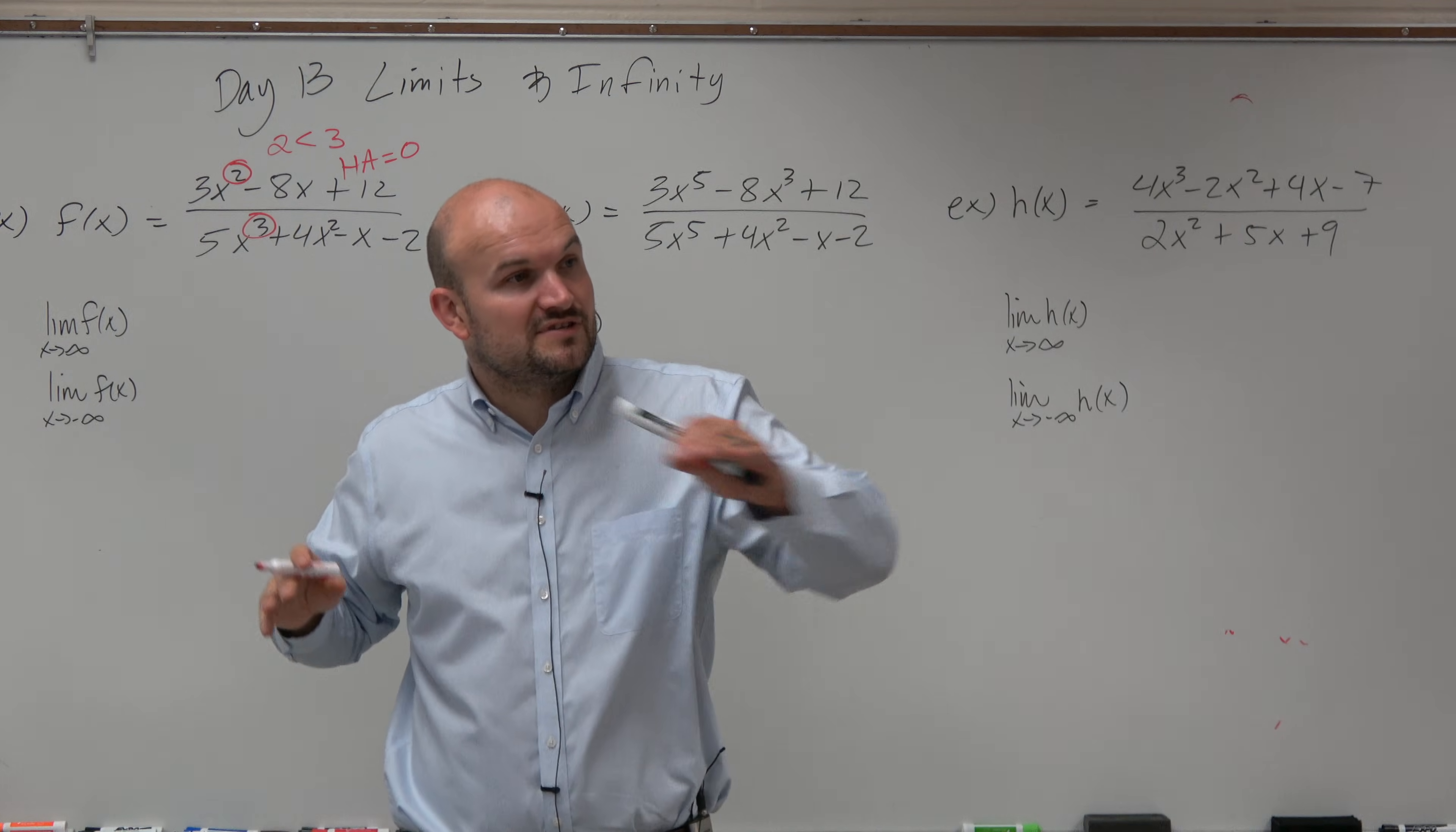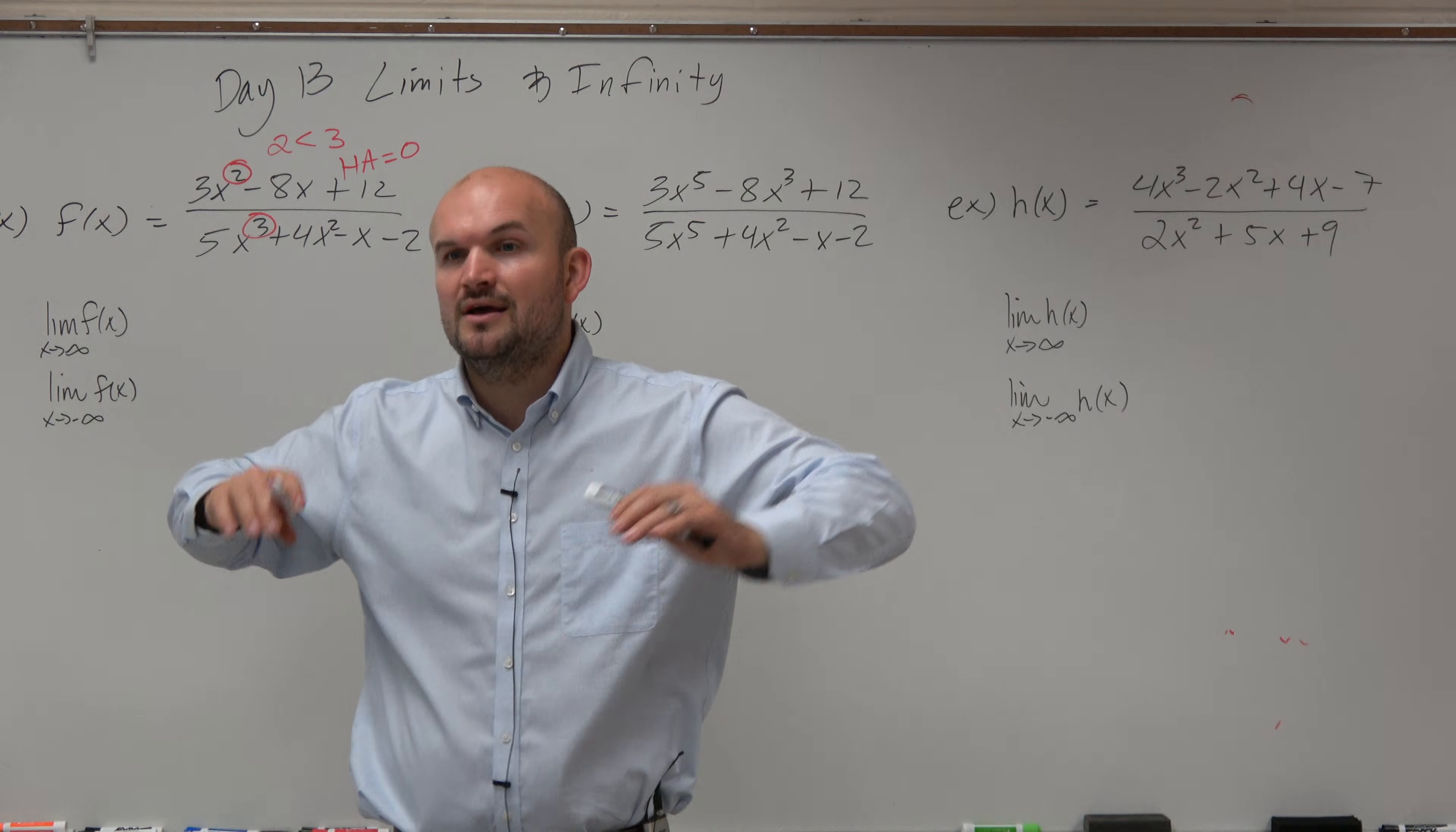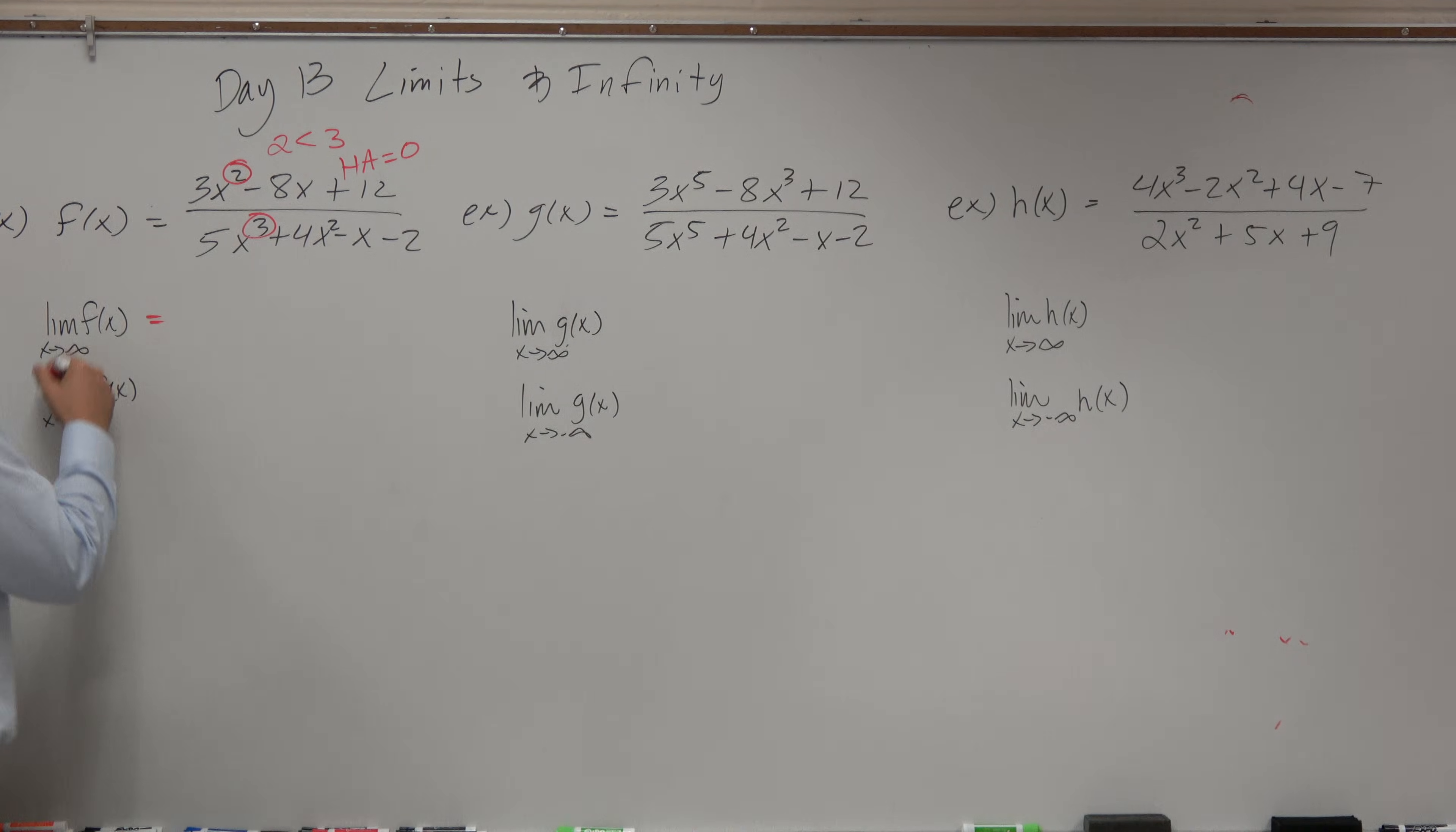So, it doesn't matter as the graph is going towards infinity or going to negative infinity. It doesn't even matter what the graph looks like. We know that the graph can cross the horizontal asymptote, it can do all this stuff. But we know its end behavior is going to be approaching the horizontal asymptote. So the first one, it doesn't matter if it's infinity or negative infinity, it's going to 0. Done. Move on.